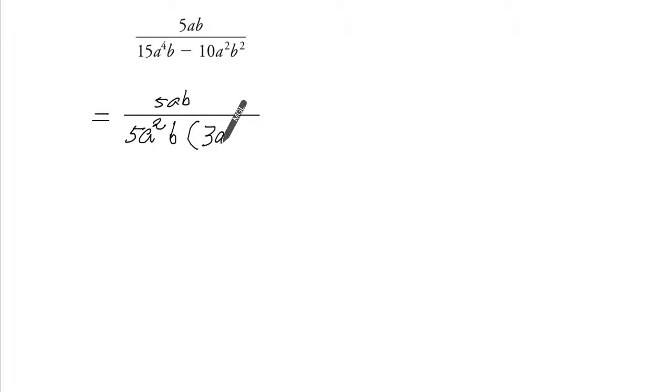So you're going to get 3A squared minus 2. A squared is all taken away. 1B is taken away, so we have a B here.